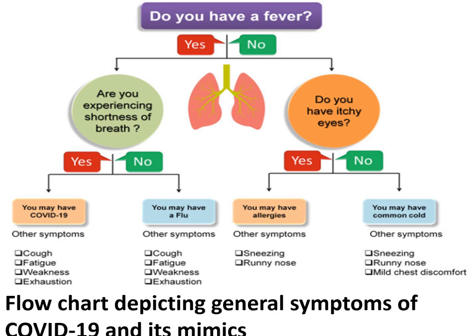A simple clinical chart to differentiate COVID-19 from other diseases: if a patient has fever and shortness of breath, they may have COVID-19 — ask about cough, fatigue, and weakness. If they have fever but no shortness of breath, they may have flu. If there is no fever but itchy eyes, they may have allergy — ask about sneezing and runny nose. If no fever and no itchy eyes, they may have a common cold, with mild chest discomfort and runny nose.